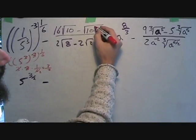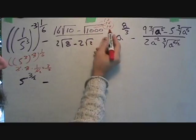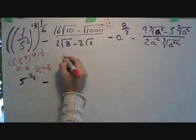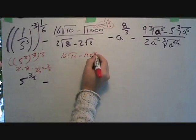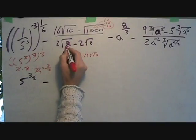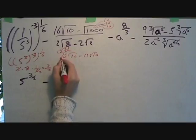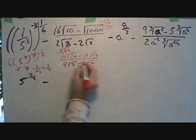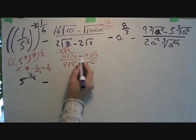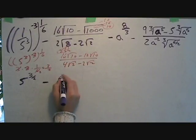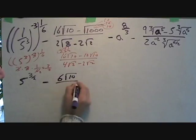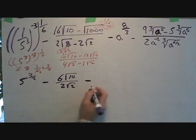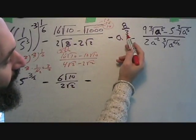Now let's deal with the radical terms. 1000 breaks down into 10 × 10 × 10; square root means grab two things and bring them up, so this becomes 16√10 minus 10√10. For the 8 term: 8 is 2 × 2 × 2, two twos come out and multiply the 2 in the front, so this becomes 4√2 minus 2√2. We can now combine like terms: 16√10 minus 10√10 is 6√10, over 4√2 minus 2√2.